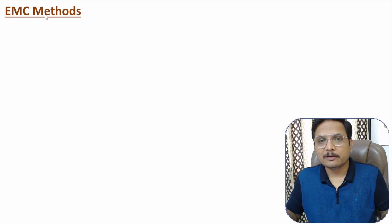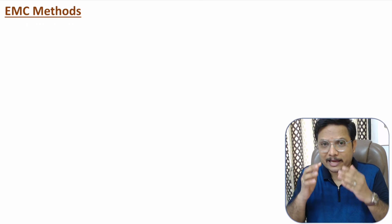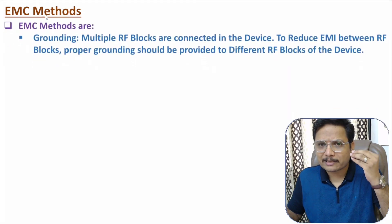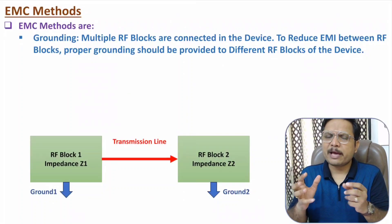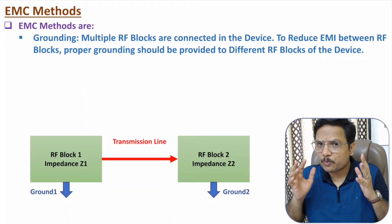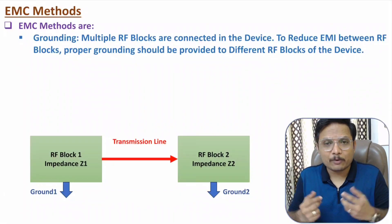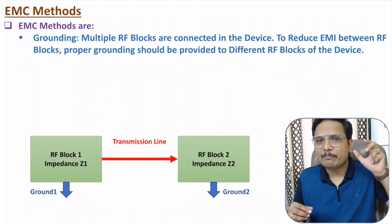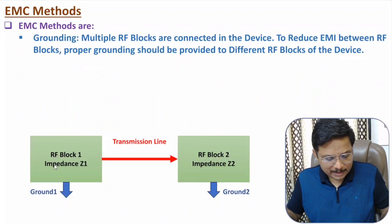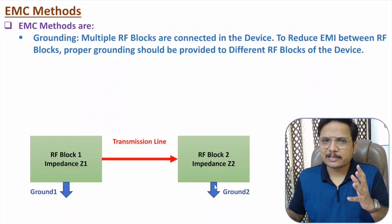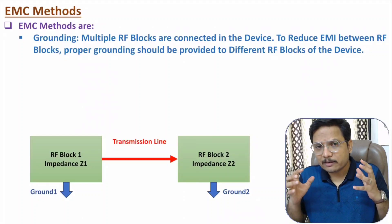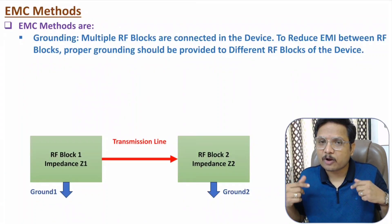Now I will discuss about EMC methods. EMC provides control over EMI, and to provide that control there are a few important methods. The first method is grounding. Grounding is very essential. In a given device we have multiple blocks, and it is very essential to have proper grounding for those blocks. Proper grounding means if block 1 has impedance Z1 and block 2 has impedance Z2, you should not provide common grounding to these two blocks. If you provide separate proper grounding to block 1 and block 2 individually, then we can minimize EMI.